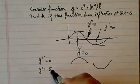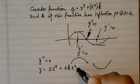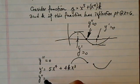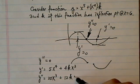y prime is equal to 5x to the fourth, plus 4kx to the cube. y double prime equal to 20x third, plus 12kx squared.